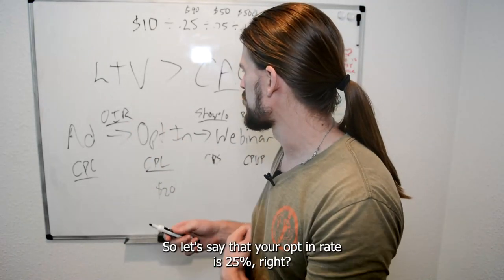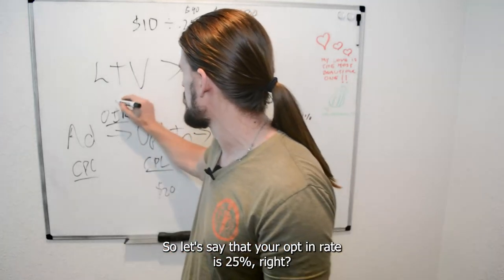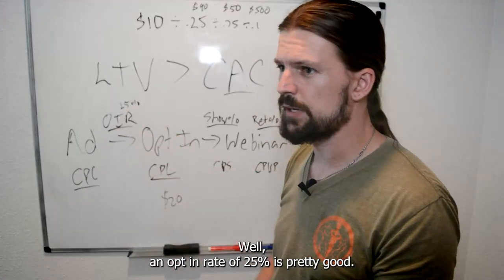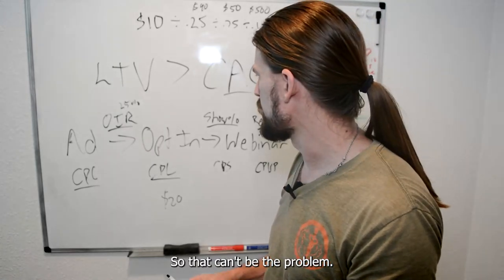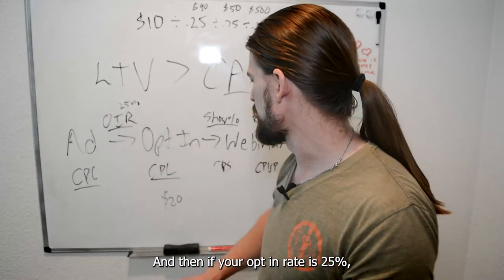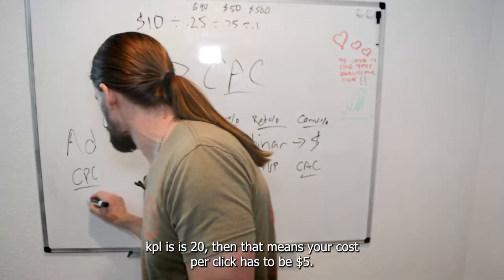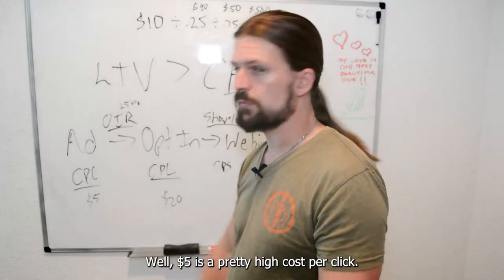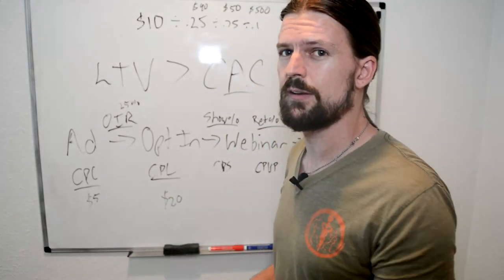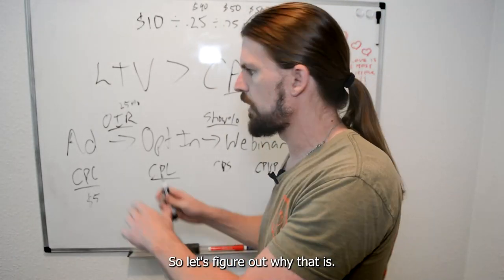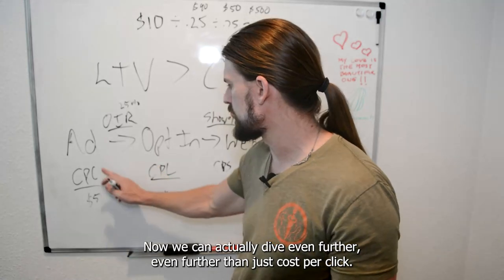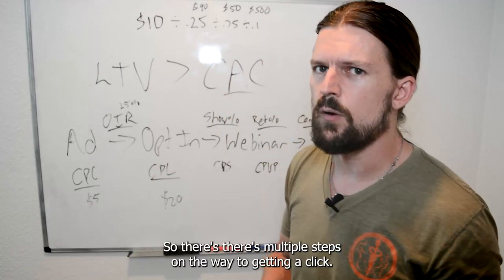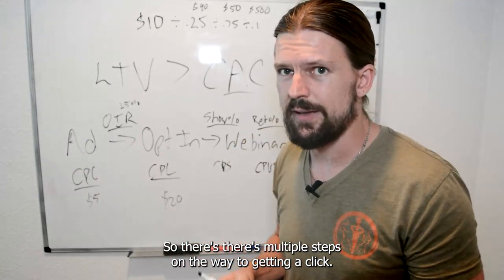If cost per lead is too high, there are two numbers to check: cost per click is too high, or the opt-in rate is too low. Let's say your opt-in rate is 25% — that's pretty good, so that can't be the problem. If your opt-in rate is 25% and CPL is $20, then your cost per click has to be $5. That's a pretty high cost per click, so now you need to figure out why.